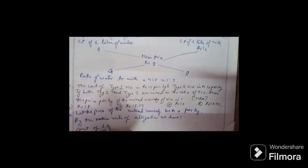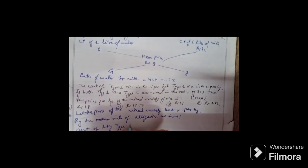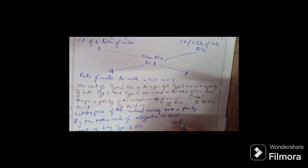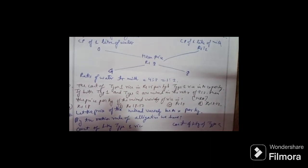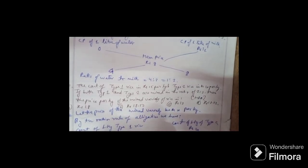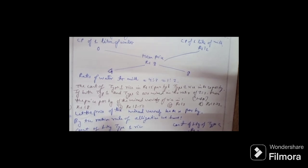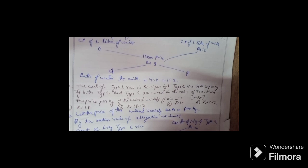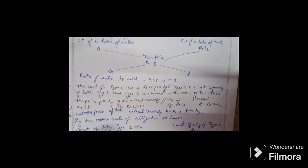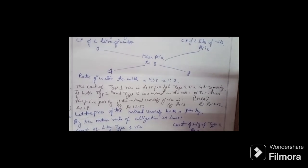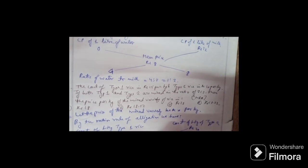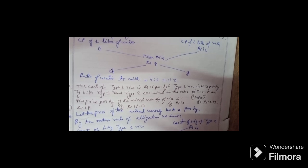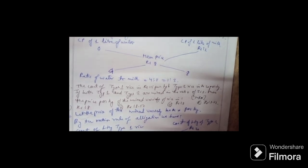Cost of 1 kg of type 1 is 15 rupees. Cost of 1 kg of type 2 is 20 rupees. Setting up: (20 - X)/(X - 15) = 2/3. Cross-multiplying: 60 - 3X = 2X - 30. Therefore, 5X = 90, so X = 18.